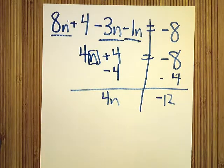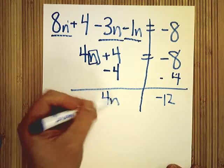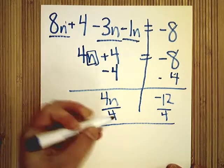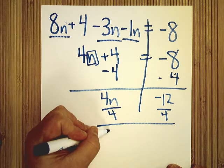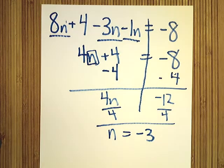Finally, I'm going to finish them. So, try to get n by itself at this point. Four times n, divided by four. n equals negative three.